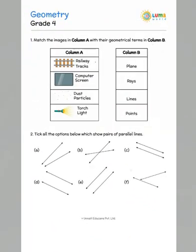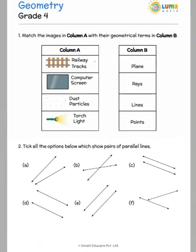Look at the answers for the geometry question here. We have railway tracks which are lines, computer screen is a plane, the dust particles are like points, and the torch light which beams out rays.